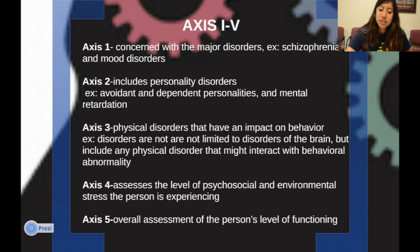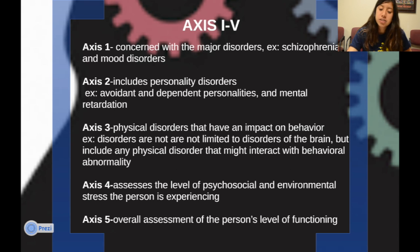Axis one is concerned with the major disorders — for example, schizophrenia and mood disorders. Axis two includes personality disorders, such as avoidant and dependent personalities, as well as mental retardation.